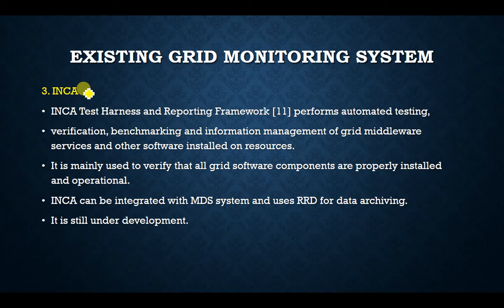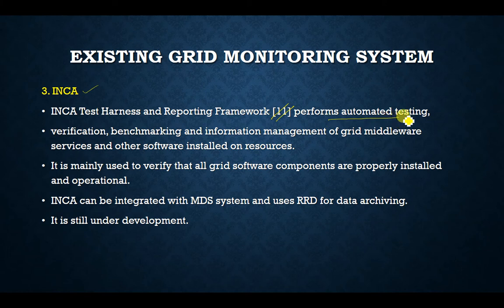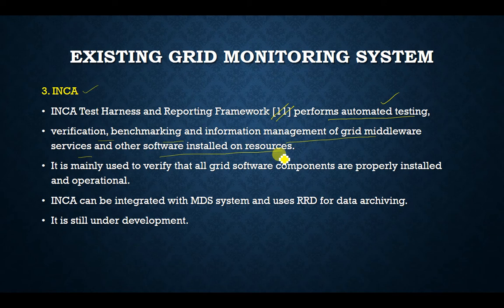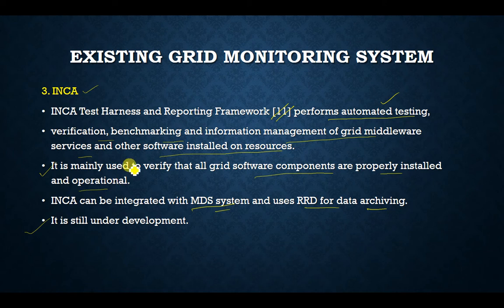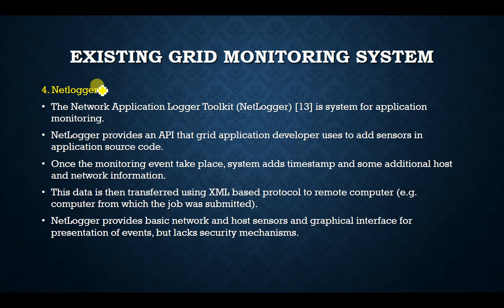The third system is INCA — a test harness and reporting framework that performs automated testing, verification, benchmarking, and information management of grid middleware services and other software installed on resources. It is mainly used to verify that all grid software components are properly installed and operational. INCA can be integrated with MDS and uses a round-robin database (RRD) for data archiving. It is still under development.